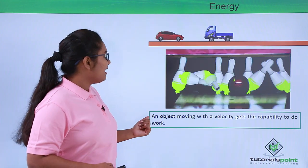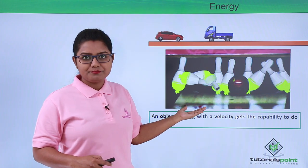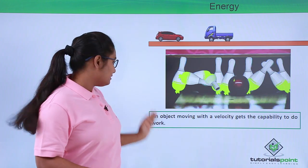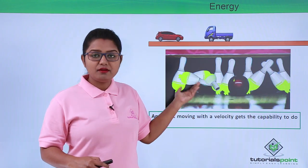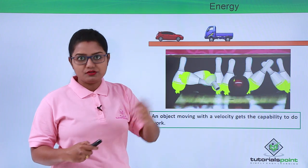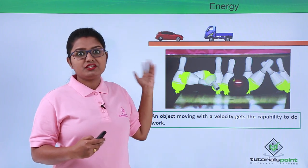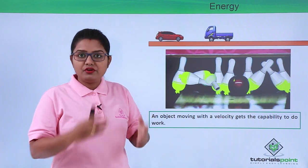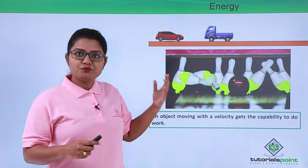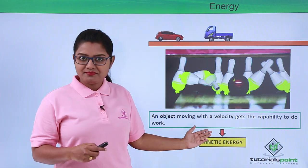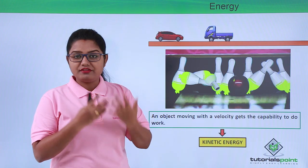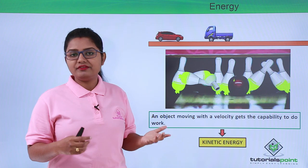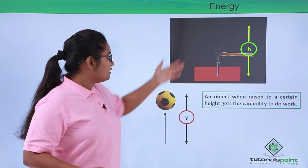Looking again at the examples we discussed, we concluded that an object moving with a certain velocity is capable of doing work — it has some energy. The kind of energy which an object possesses because it is moving, or by virtue of its motion, is what we call kinetic energy. So kinetic energy is a kind of energy which an object possesses because of its motion.